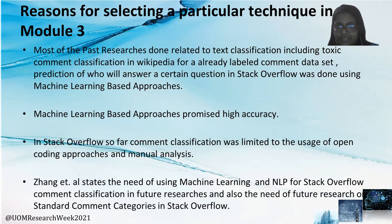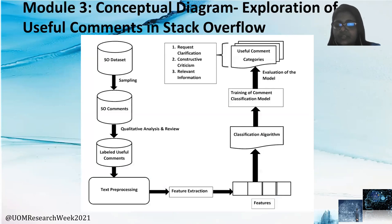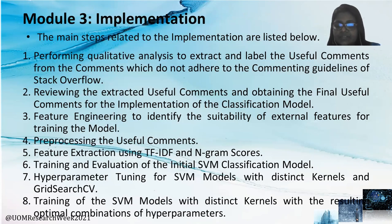Prediction of who will answer a certain question in Stack Overflow was done using machine learning-based approaches, which promised high accuracy. In Stack Overflow, so far, comment classification was limited to usage of open coding approaches and manual analysis. The implementation consists of the following steps: performing qualitative analysis to extract labels of useful comments, reviewing the extracted useful comments, and obtaining the final useful comments. Feature engineering to identify the suitability of external features. Pre-processing and feature extraction using TF-IDF and N-grams. Training and evaluation of the initial SVM classification model.